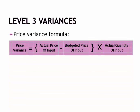Here we have our price variance formula. Our price variance is all about the difference in the price. Actual price of the input — what did we actually pay — minus what did we plan to pay for the input. So actual price minus the budgeted price of the inputs gives us our difference, and we multiply that times the actual quantity of input. This can be unfavorable or favorable.